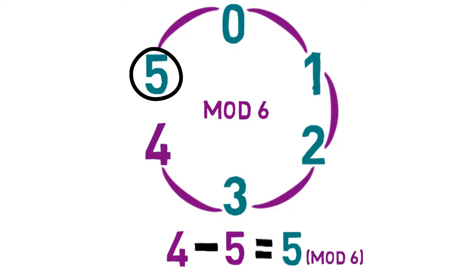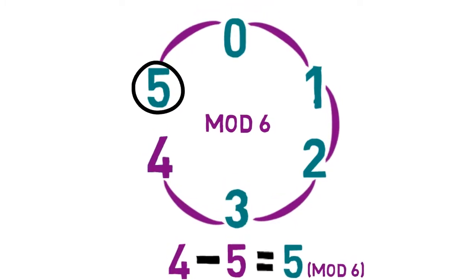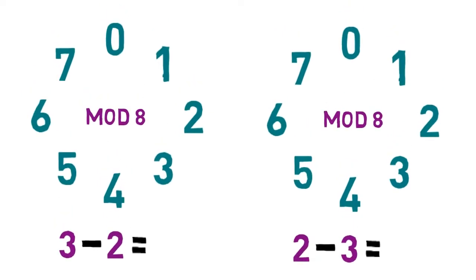As another example, consider these two problems in modulo 8. Again, when you subtract a number minus a smaller number, the result is the same as in regular subtraction.